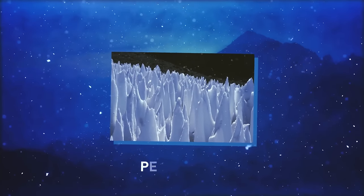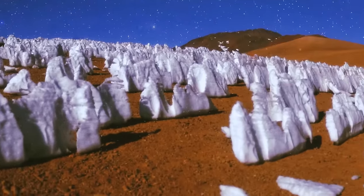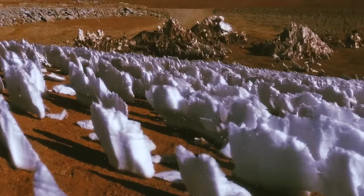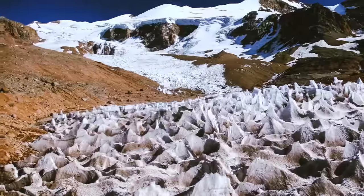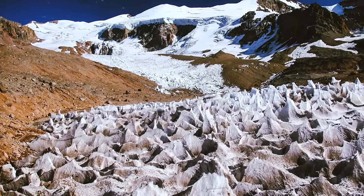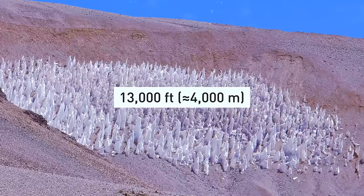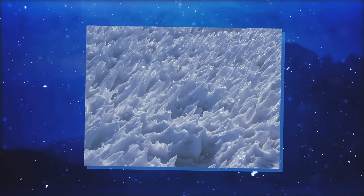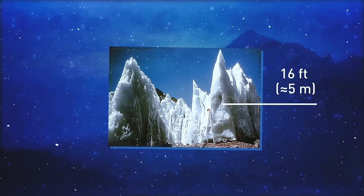Another amazing ice phenomenon is called penitentes. These are snow formations found at very high altitudes. Numerous and closely spaced, they look like long, thin blades of hardened snow or ice that point towards the sun. These icy spires grow over snow-covered and glaciated regions in the dry Andes at a height of more than 13,000 feet. Some penitentes are just several inches tall, while others reach 16 feet — that's around three human heights.